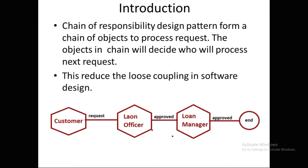This reduces loose coupling in the software design. As an example, we have a loan processing application. The customer requests a loan, the loan officer receives the request, checks it, and approves it. Then the loan manager approves the request and the process ends. Each object, like the loan officer, knows who the next object is to process the request. We can have many such examples, like a document management system where a document flows from one department to another.